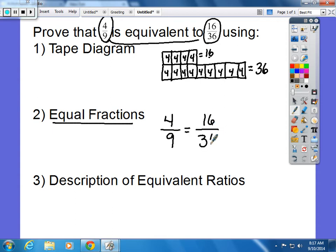If two ratios are equivalent, using fractions, you will multiply the numerator and the denominator by the same number. 4 times 4 is 16, whatever you do to the top of a fraction, equal fractions, you must do to the bottom. 9 times 4 is 36, these are equal.